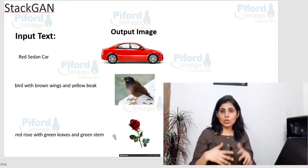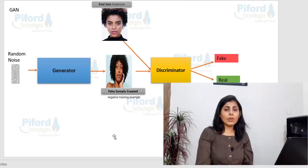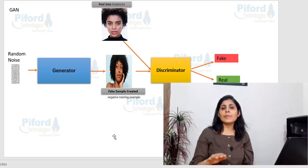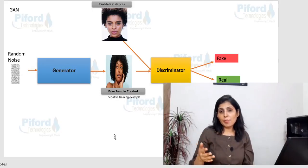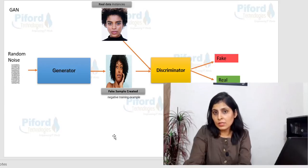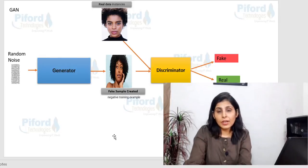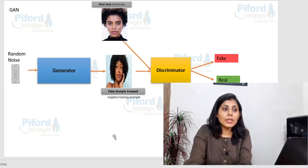Before going into StackGAN, let me give you a brief idea of what a normal GAN network is, because today we'll compare StackGAN with a normal GAN. In every GAN network we have a generator and a discriminator. The generator generates a fake image, and that image goes to the discriminator. The task of the discriminator is to distinguish between the real sample and the fake sample — it is basically a classifier.